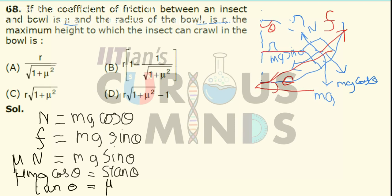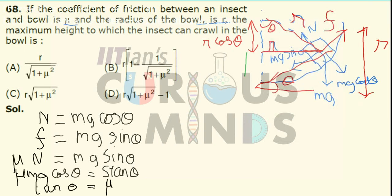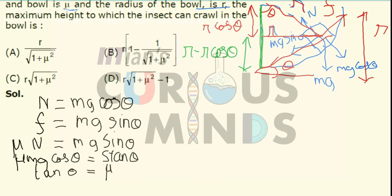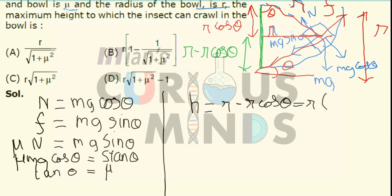Now, the radius is equal to R. By geometry, the side adjacent to θ will be equal to R cosθ. The entire height of the bowl is R, so this height will be equal to R minus R cosθ. Therefore, the maximum height the insect can reach will be equal to R(1 - cosθ).